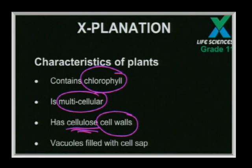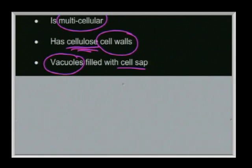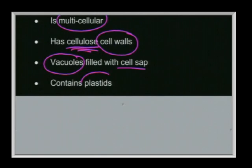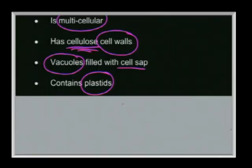Plants have large vacuoles filled with cell sap, and the surrounding membrane is called the tonoplast. Plastids are the umbrella group: under plastids we have leukoplasts, responsible for storing food — found in potatoes, rice, and maize; chromoplasts, which give color; and chloroplasts, which also give color but whose primary function is containing chlorophyll to absorb sunlight energy.